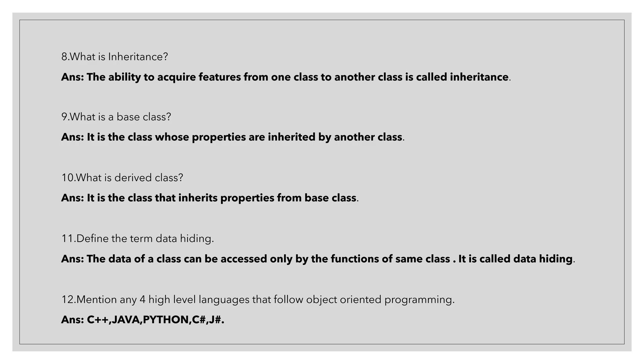Ninth question is, what is a base class? It is a class whose properties are inherited by another class, called as base class. Tenth question is, what is derived class? It is a class that inherits properties from base class, called as derived class.